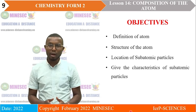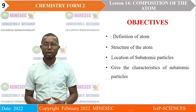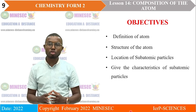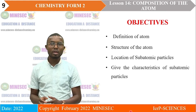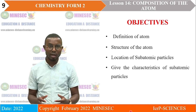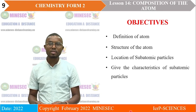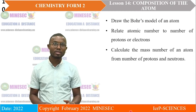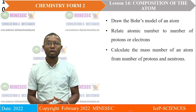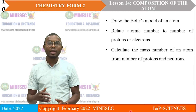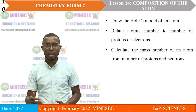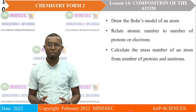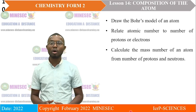By the end of this topic, learners should be able to define an atom, draw the structure of an atom, locate subatomic particles in an atom, give the characteristics of subatomic particles, draw the Bohr model of an atom, relate the atomic number to the number of protons or electrons in an atom, and calculate the mass number of an atom from the number of protons and neutrons.